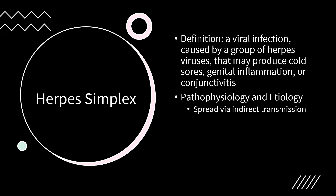HSV-specific CD8 T cells play an important role in recurrent infections. HSV infections incite an inconsistent antibody production offering only partial protection against recurrences. HSV-1 causes oral, facial, and eye infections by contact from an infected individual, while HSV-2 causes genital disease transmitted sexually. HSV-2 can be transmitted to neonates during birth and to children through oral-facial contact by infected adults.